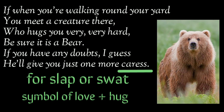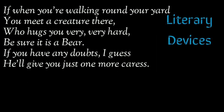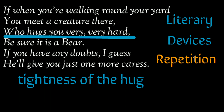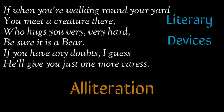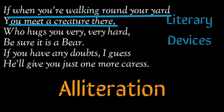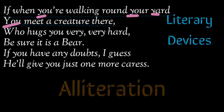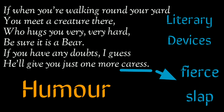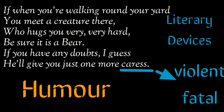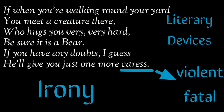In this stanza, the poet has used repetition in 'who hugs you very, very hard' to emphasize the tightness of a bear's hug, which may prove to be fatal. The poet has also used alliteration — in the line 'if when you're walking around your yard, you meet a creature there,' the letter Y is repeated. Humor is also present — 'caress' is used for the fierce slap or swipe of a bear, which can also be stated as an example of irony, since a caress is soft and gentle whereas a bear's stroke is violent and fatal.